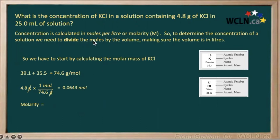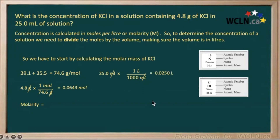To calculate molarity, we divide the number of moles by the volume — but the volume must be in liters, not milliliters. Using the conversion factor that 1 liter equals 1000 milliliters, 25 milliliters divided by 1000 gives us 0.025 liters.